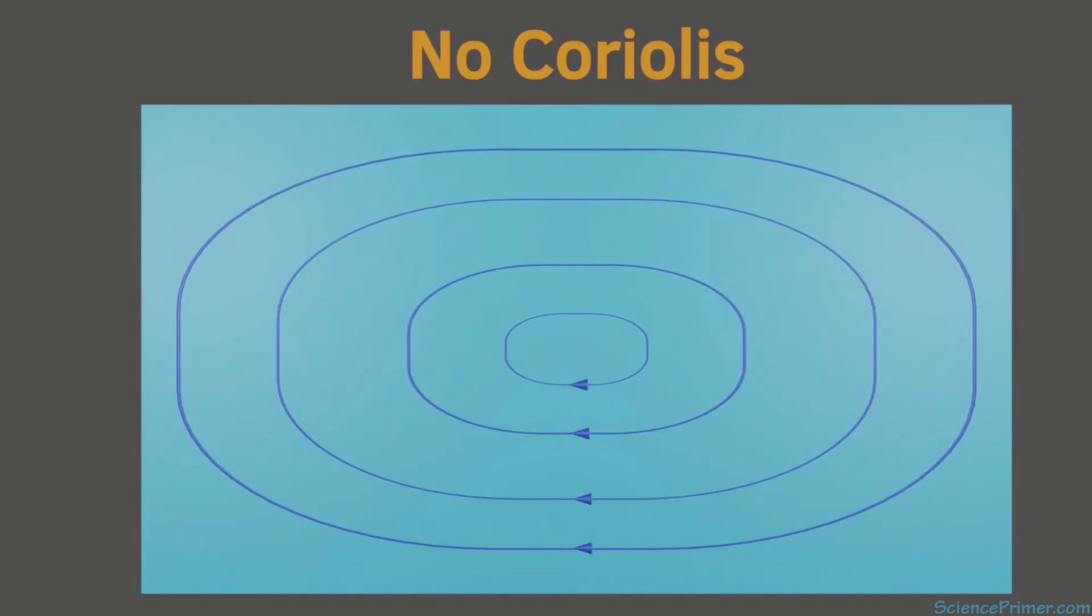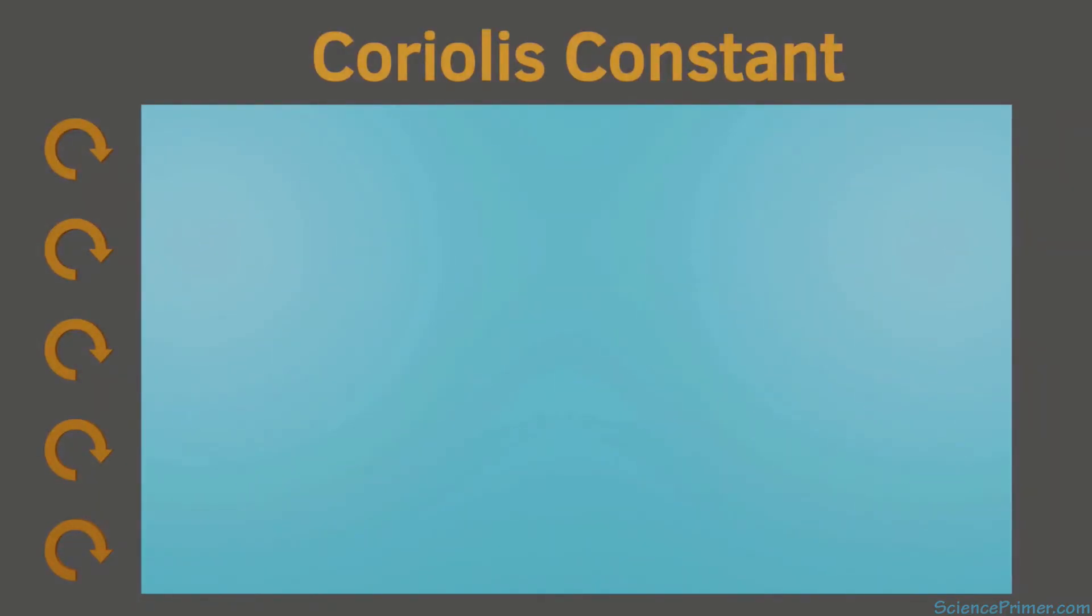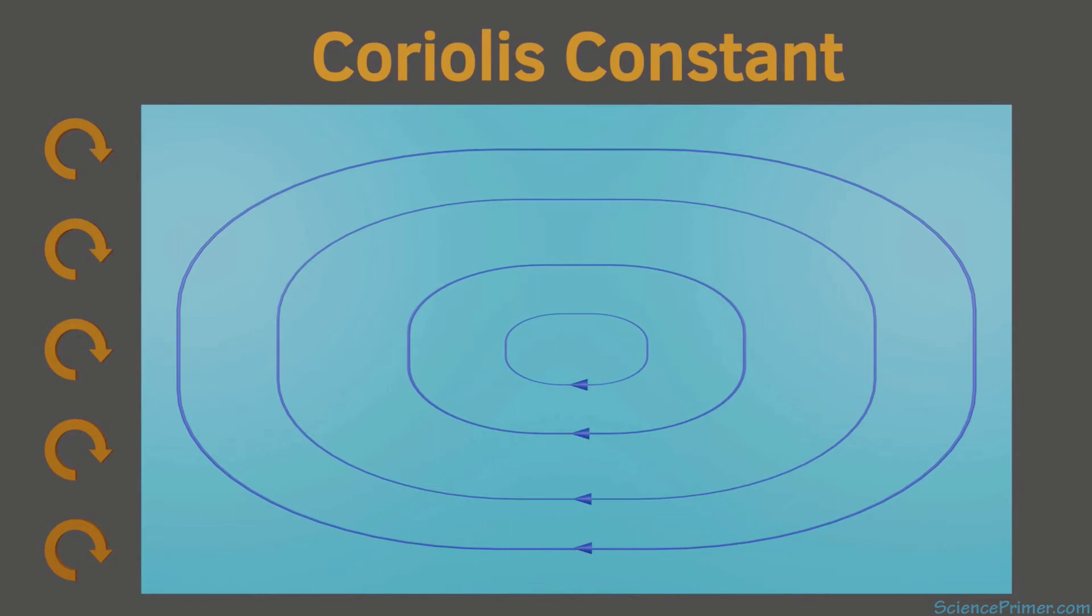He then asked what happens when a Coriolis force is added. First, he added a Coriolis parameter, but held it constant, so that it did not vary with latitude. Under a constant Coriolis force, particle movement was similar to the no Coriolis force condition, with particles continuing to travel in symmetrical paths around the basin.